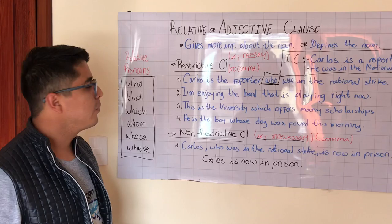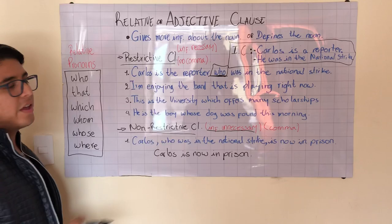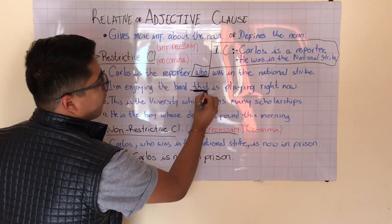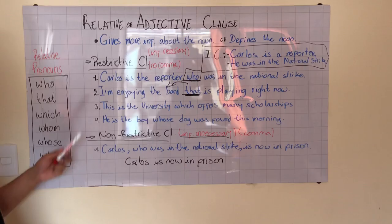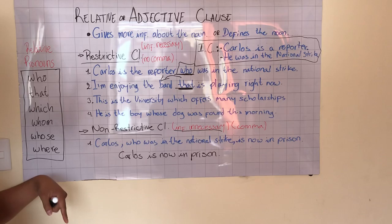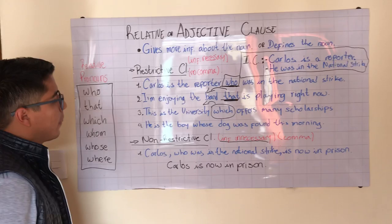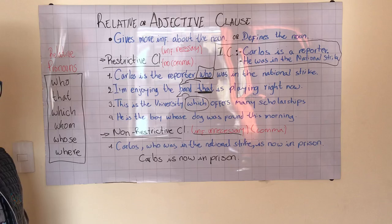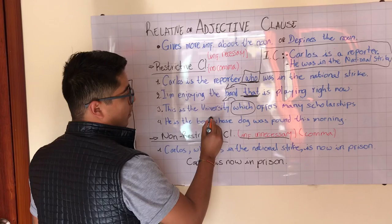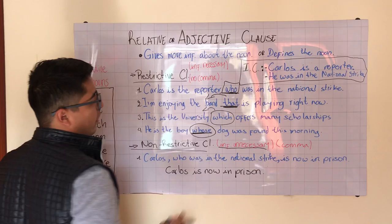If someone asks 'Who is Carlos?' we can say 'the one who was in the national strike.' For another example using 'that': 'I am enjoying the band that is playing right now' — here 'that' provides information about the band. And: 'This is the university which offers many scholarships' — here 'which' is used to talk about the university.